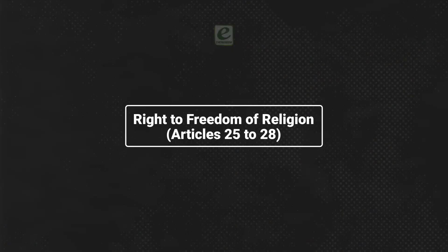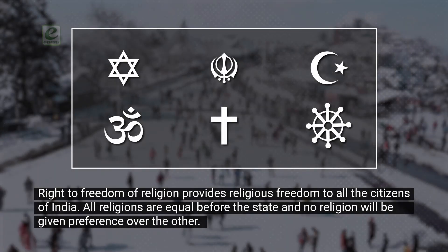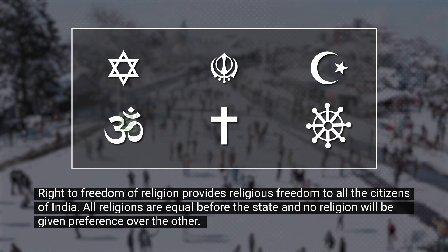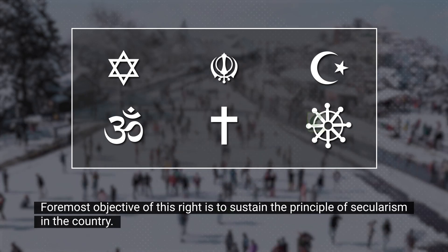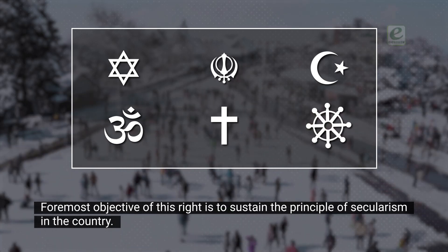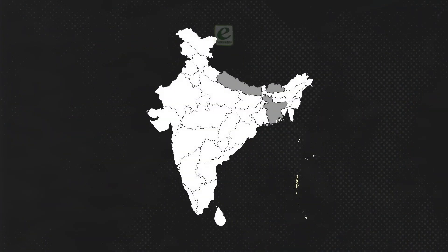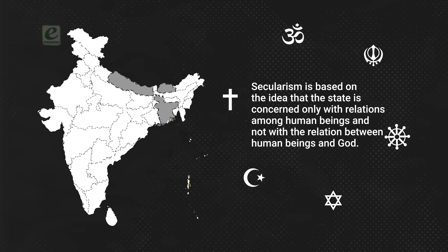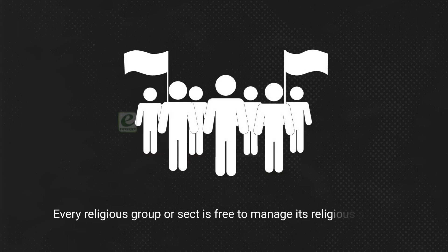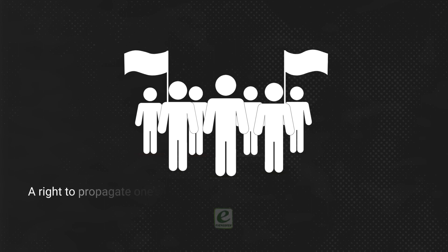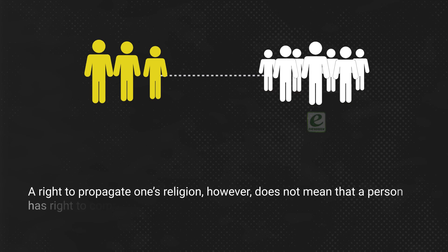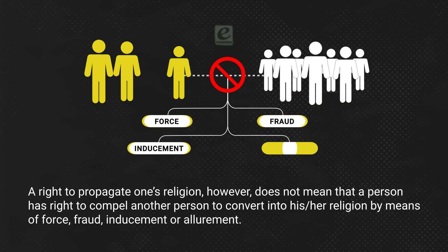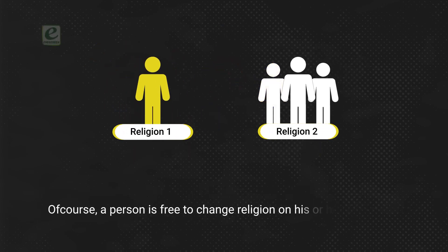Right to Freedom of Religion, Articles 25 to 28: This right provides religious freedom to all citizens of India. All religions are equal before the state and no religion will be given preference over another. The foremost objective of this right is to sustain the principle of secularism — the idea that the state is concerned only with relations among human beings and not with the relation between human beings and God. Every religious group or sect is free to manage its religious affairs. The right to propagate one's religion does not mean compelling another person to convert by means of force, fraud, inducement or allurement. A person is free to change religion on his or her own will.